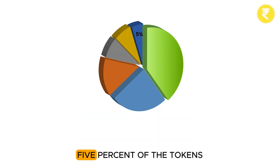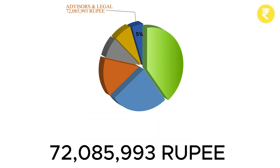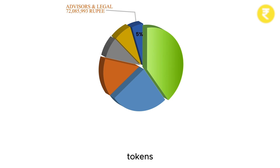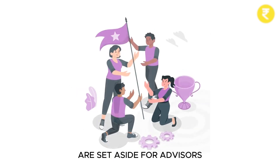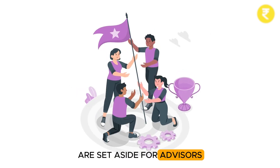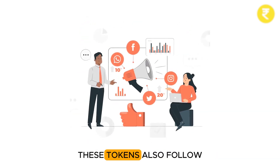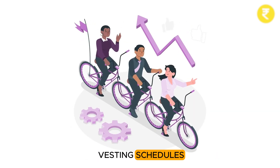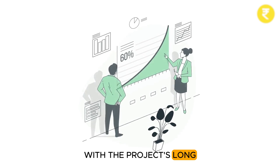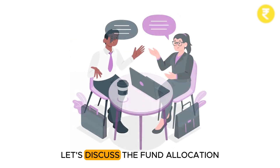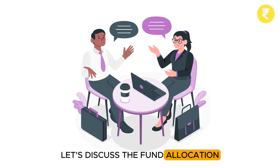5% of the tokens, or 72,085,993 rupee tokens, are set aside for advisors who provide strategic guidance and insights. These tokens also follow vesting schedules to align their interests with the project's long-term success.